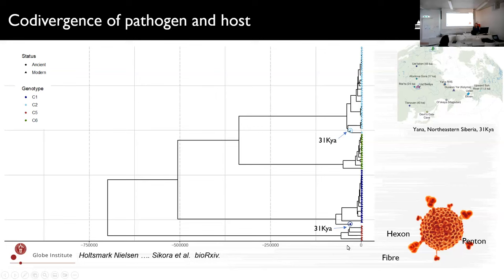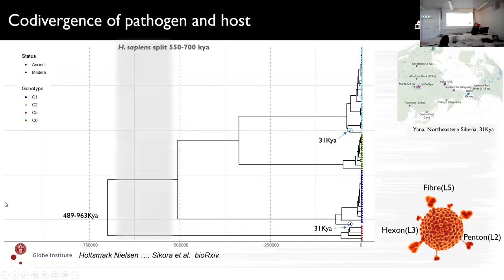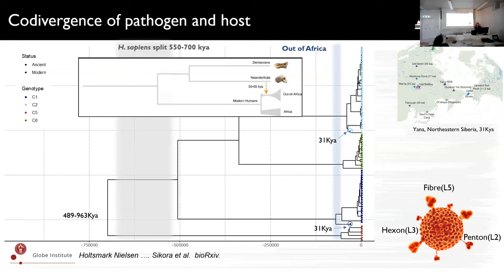One of the most interesting estimates from these temporal approaches is: when would all circulating human adenovirus C last share a common ancestor? We estimate that time window at between approximately 489,000 and 963,000 years ago — a really interesting period that overlaps with current ideas about the split time of Homo sapiens from its nearest ancestors, fitting well with a co-divergent scenario. However, the modern genotypes circulating today emerged really quite recently — we estimate all modern genotypes date to within the last roughly 70,000 years, which falls very nicely with the period of the out-of-Africa migrations.